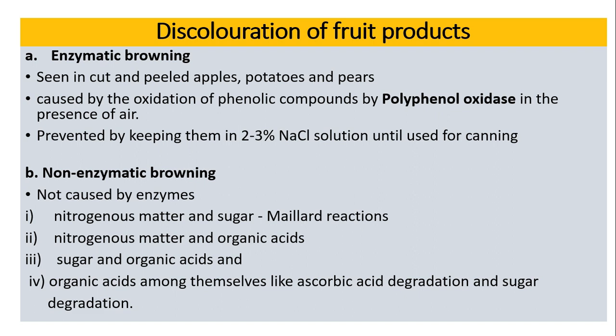Discoloration of food products: enzymatic browning is seen in cut and peeled apples, potatoes, and pears, caused by oxidation of phenolic compounds by polyphenol oxidase enzyme. This is prevented by keeping them in a 2–3% sodium chloride solution until used for canning.